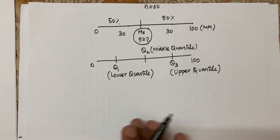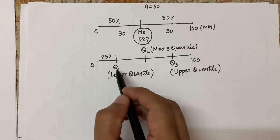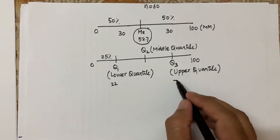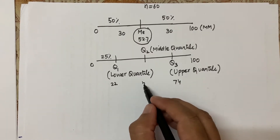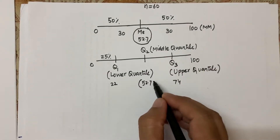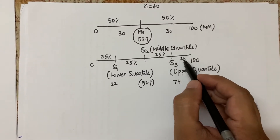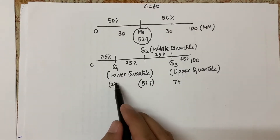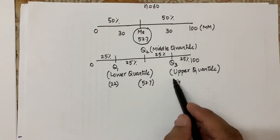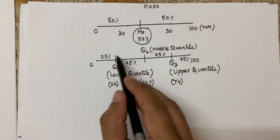So quartile divides the data exactly into four equal parts. In this class of 60 students, 25% will be scoring below Q1. If Q1 comes out to be 22, Q3 is 74, and Q2 is 52.7 — notice Q2 is always equal to median. So the bottom 25% score below 22, the top 25% score above 74, and the center 50% of the data falls between Q1 and Q3.